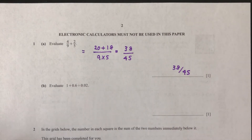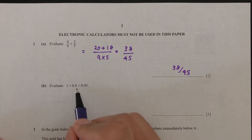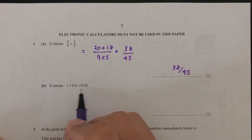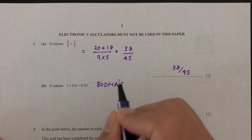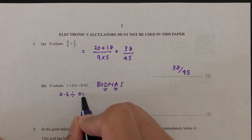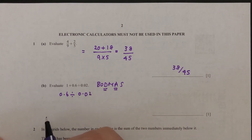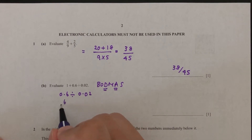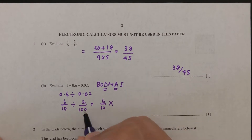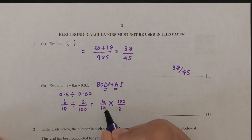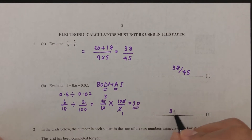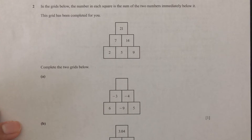Moving on to part B: 1 plus 0.6 divided by 0.02. When we have many operations in the same equation we have to follow the BODMAS rule, which means we do division before addition. So 0.6 divided by 0.02 — I can write this as fractions: 6 over 10 divided by 2 over 100, which equals 6 over 10 multiplied by 100 over 2. Simplifying gives 30, so 30 plus 1 is 31. That's your answer for part B.